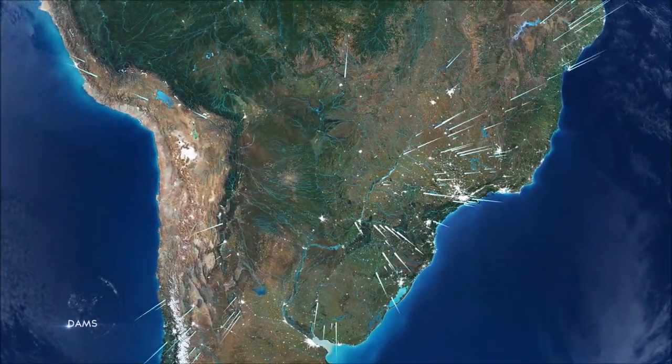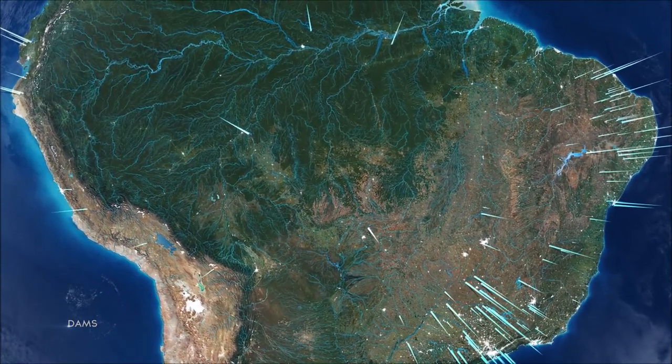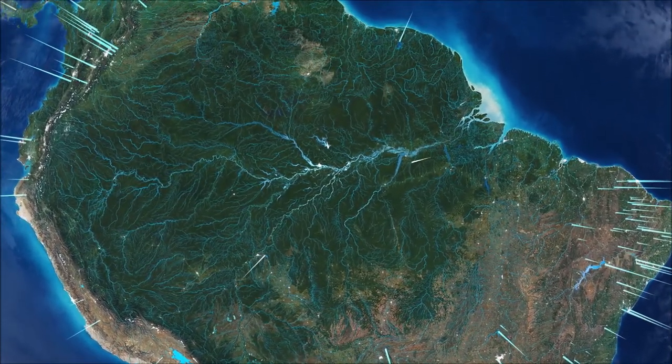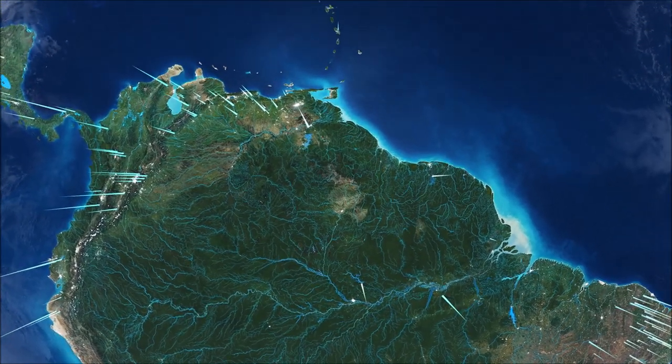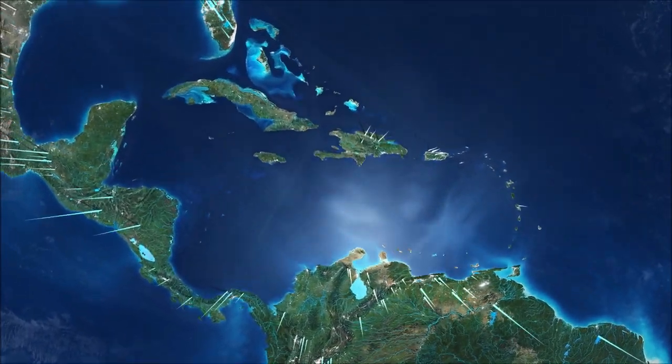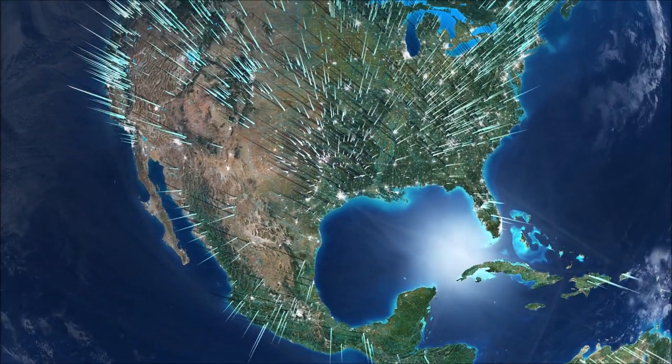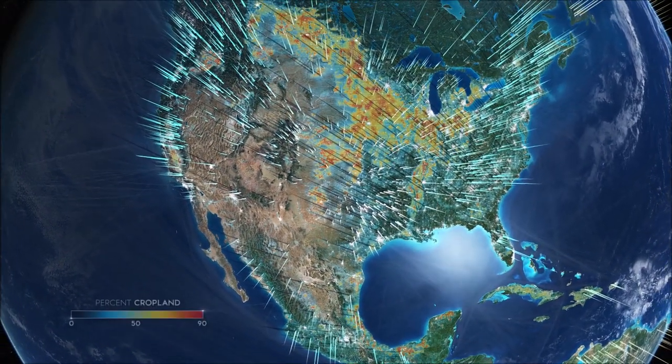We've drained half of global wetlands. We use an area the size of South America to grow our crops, an area the size of Africa for our livestock. Agriculture accounts for 70% of global fresh water use, and we need to feed a growing population.